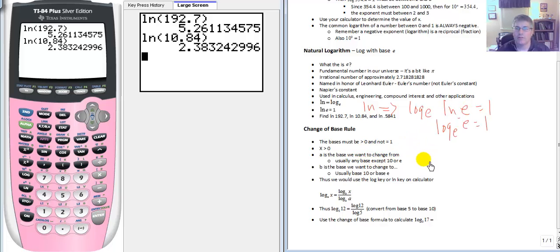We want to usually change from any base except 10, the common log or e. And we usually want to change to base 10 or base e. So earlier when I talked about log base 2, we're going to want to change that to base 10. Log base 5, a lot of times we want to change that to base 10. So we'll use the log or the ln key in our calculator depending on which base we want to change to.